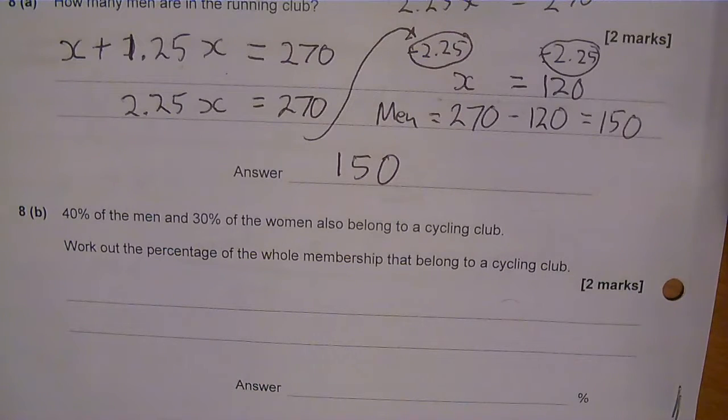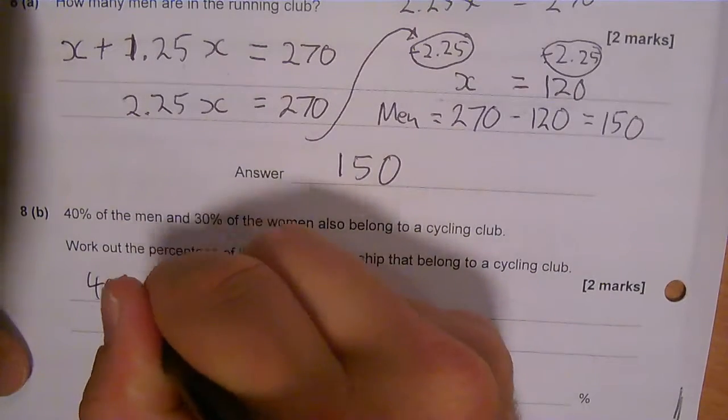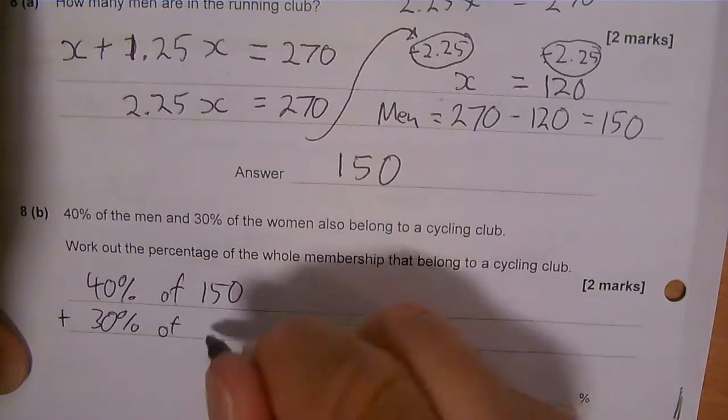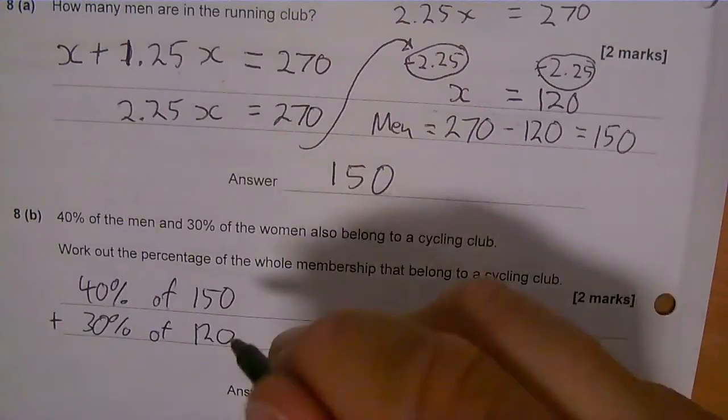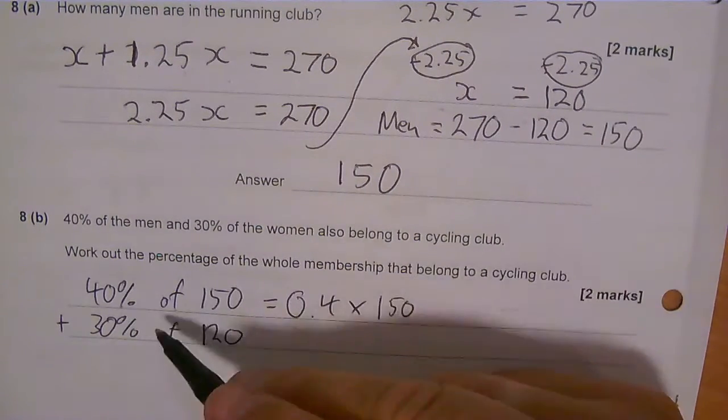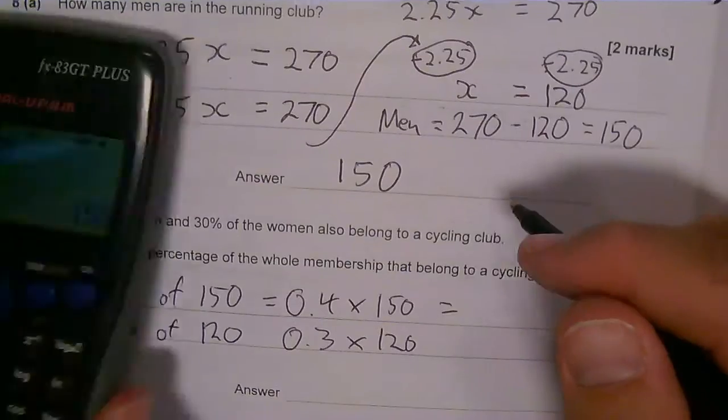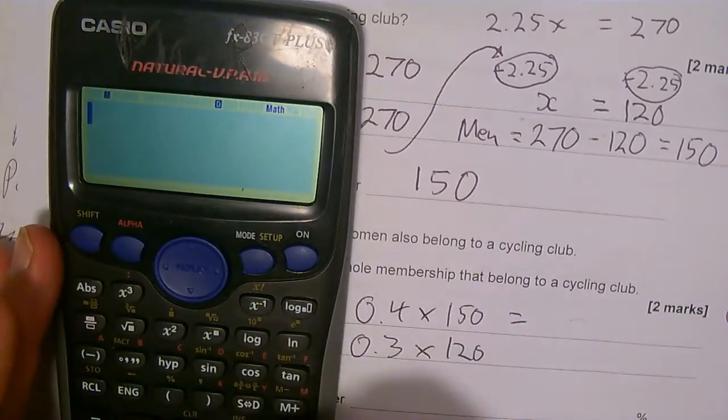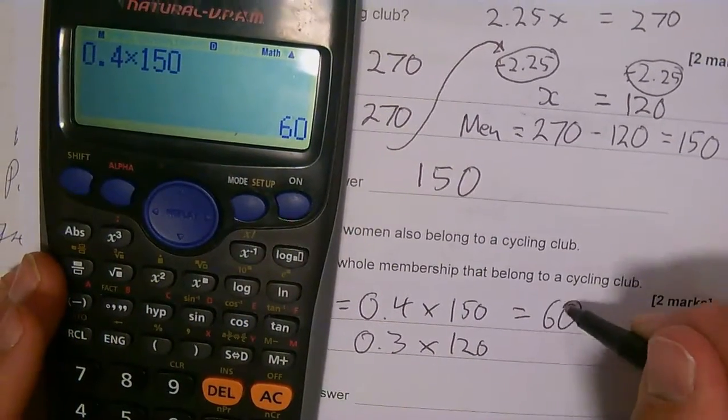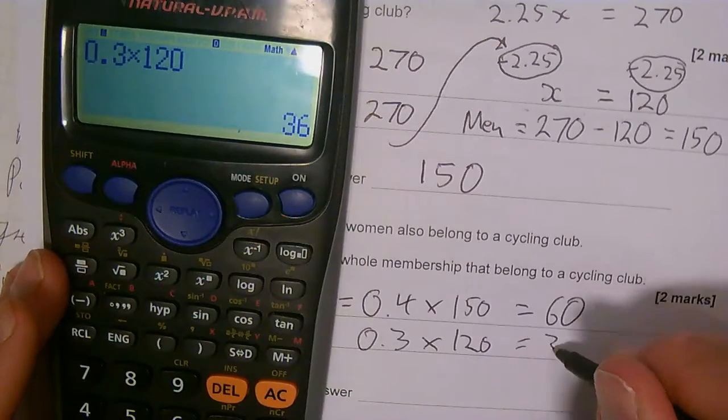Okay, so I know my number of men and I know my number of women. So if it's 40% of 150 and I want to add 30% of 120 - 40% of 150 is just 0.4 times 150, and 30% of 120 is just 0.3 times 120. Do this on the calculator. So that's 60, and 0.3 times 120 equals 36.